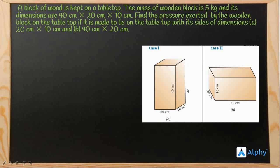So the mass of the wooden block, let us consider it as small m, is given as 5 kg. Now the weight of this wooden block applies a thrust on the tabletop. Now what is a thrust? Thrust is the force acting on an object perpendicular to the surface.